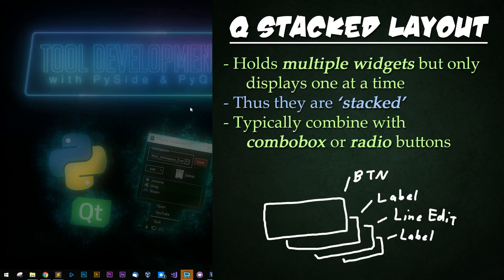Finally, there's the QStack Layout. The QStack Layout holds multiple widgets but displays only one at a time. Think of this as a mini wizard where you can toggle between different pages. You typically combine this with a combo box or radio buttons to change which widget is displayed. I personally never use this layout, so we're not going to look at an example.